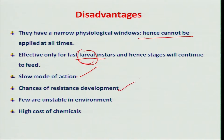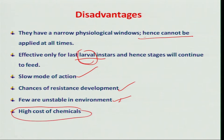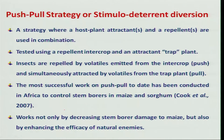Like other insecticides, the chances of resistance developing to these growth regulators is not ruled out. Naturally occurring insect growth regulators are somewhat unstable, but commercially available IGRs are more stable and produce good effects. The cost of these insect growth regulators is comparatively high compared to conventional insecticides.